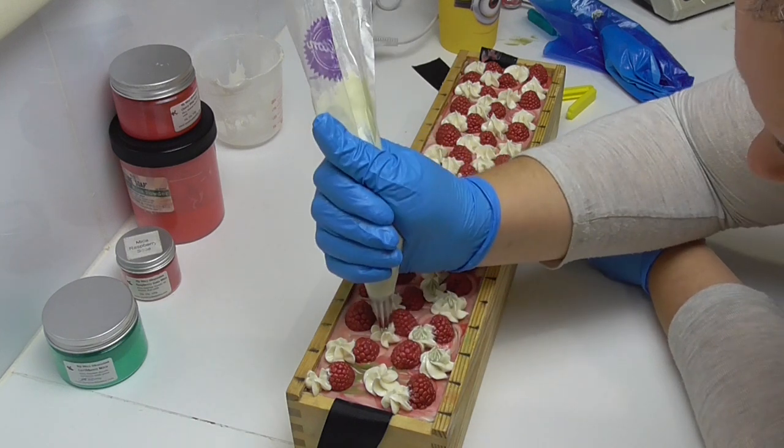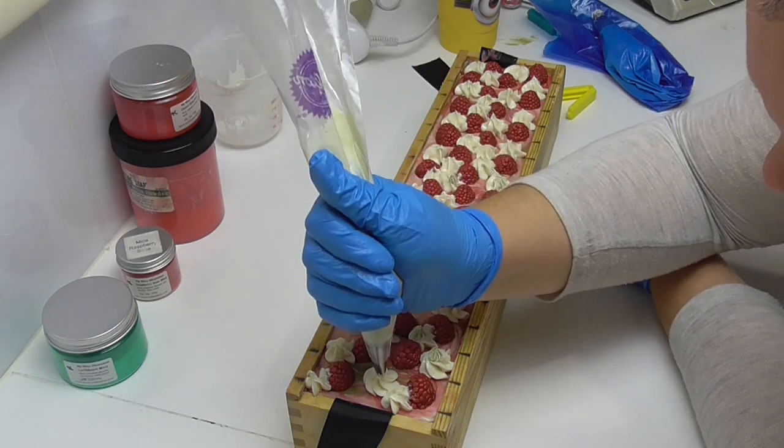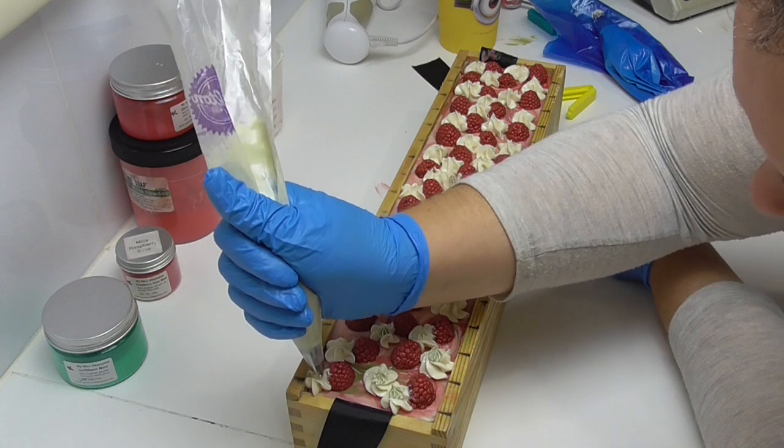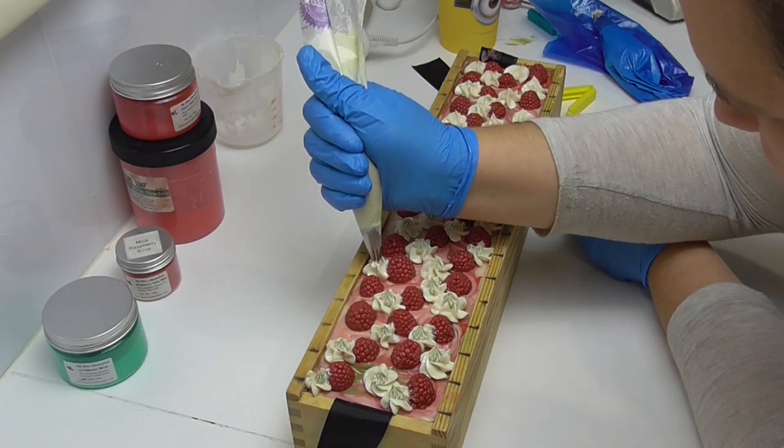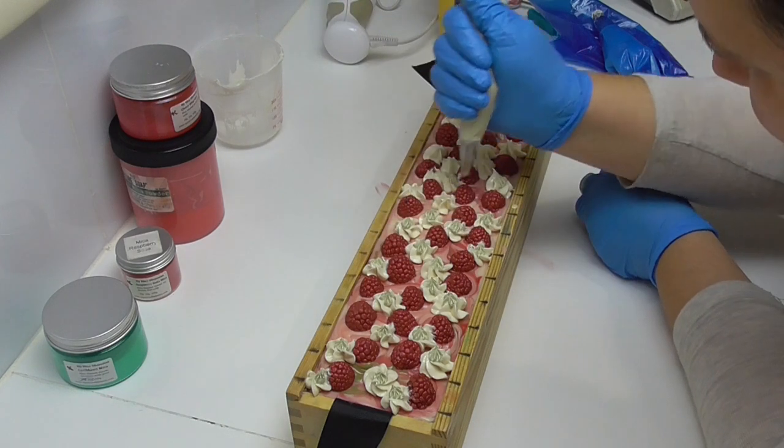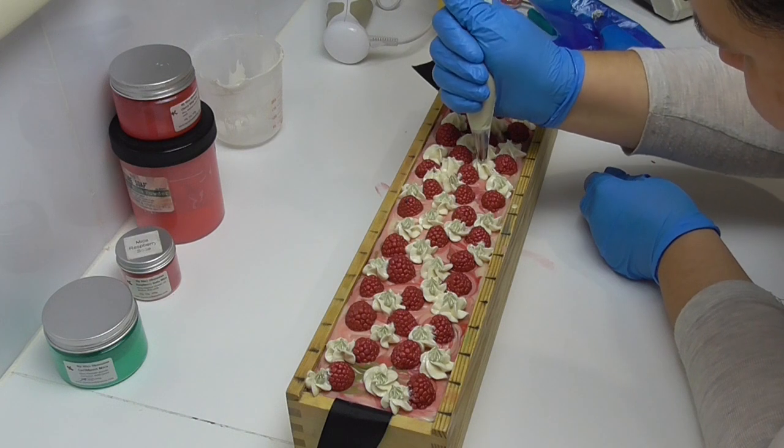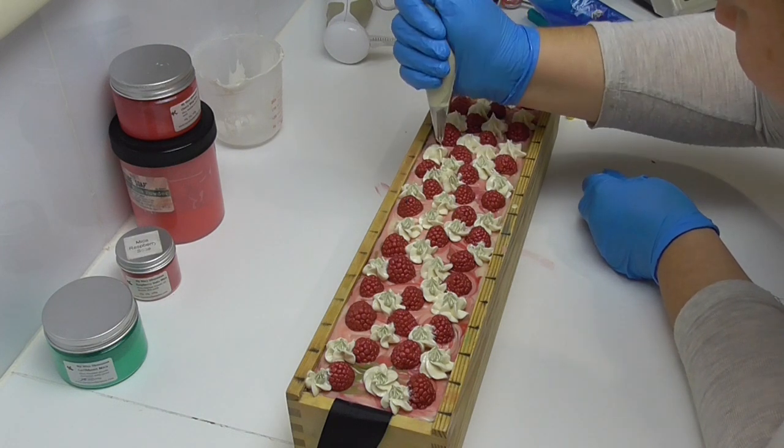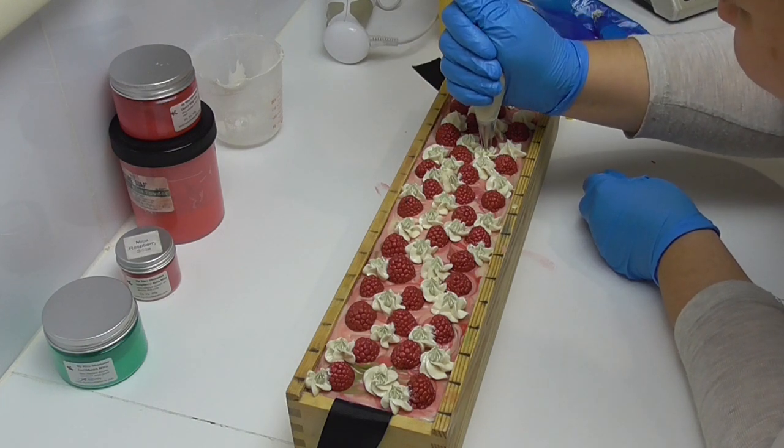So I'm going to keep piping these on. Then I have a little bit of green mixed up in a piping bag with a leaf tip, and I'm going to pipe some leaves on here as well. Hopefully it will start looking a little bit more like a raspberry bush. And then if I need to, I can either add some more raspberries or add some more of what I'm hoping are looking like raspberry flowers.